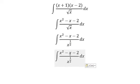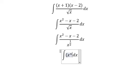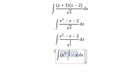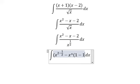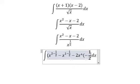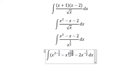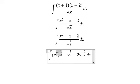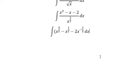We divide each term: this one divided by this one, this one divided by this one, and this one divided by this one. So we get s to the power of (2 − 1/2), negative s to the power of (1 − 1/2), and negative 2s to the power of (−1/2). This gives us exponents 3/2 and 1/2.